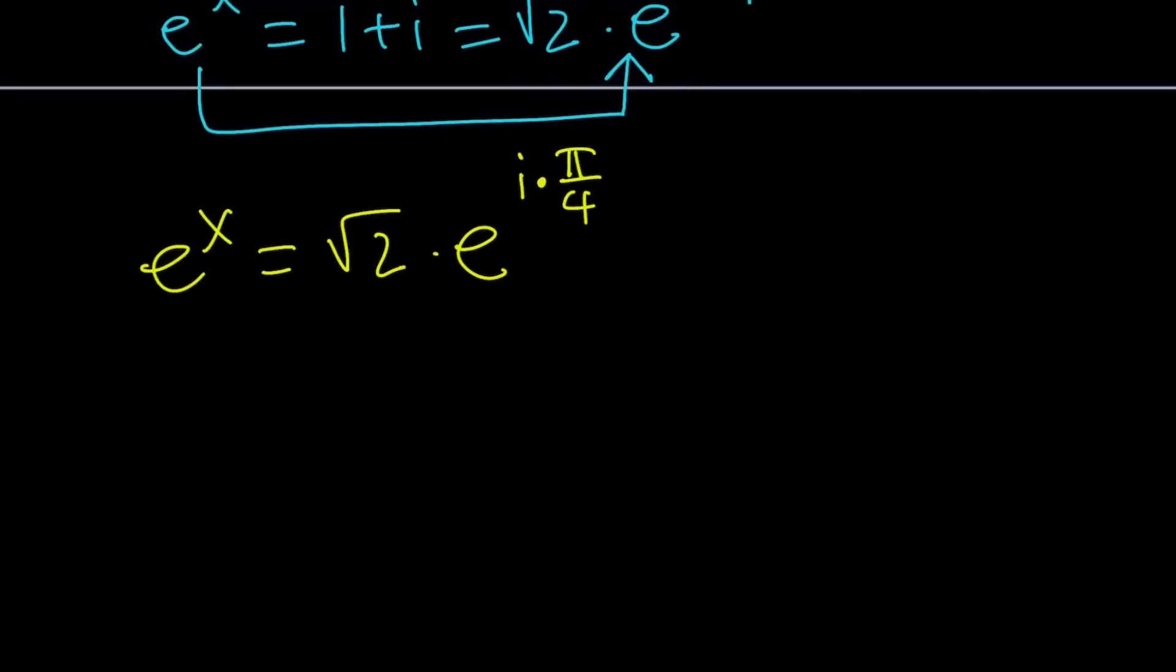At this point I'm thinking wouldn't it be nice if we didn't have the square root of 2 there. We would have e to the something equals e to the something else, so we could equate the exponents right away. That's not the case but that's perfectly fine because we're going to get rid of the e base by taking ln of both sides. We're going to take the natural log of both sides and that's going to give us the x directly.